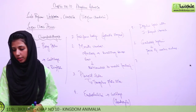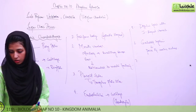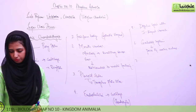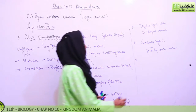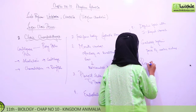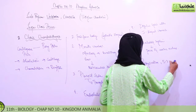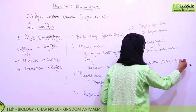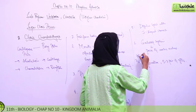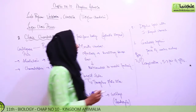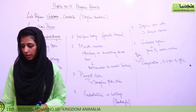Respiration is by means of five to seven pairs of gills without the operculum covering. This five-to-seven pairs of gills is the basic difference between Chondrichthyes and the previously studied class Cyclostomata.